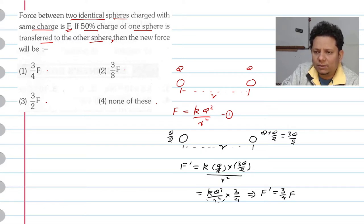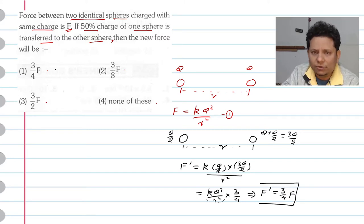Because from equation number 1, K Q² divided by R² equals F. So F' will be equal to 3F/4. Hence option number 1, 3F/4, is the right answer.